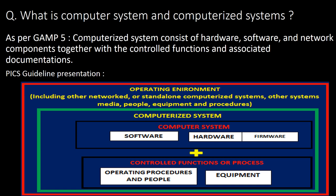Another basic and frequently asked question is: what is a computer system and a computerized system? As per GAMP-5, a computerized system consists of hardware, software, and network components together with the control functions and associated documentation. As per the PICS guideline, a computer system is formed with software, hardware, and firmware, whereas when it includes control functions or processes like operating procedures and people along with equipment, it forms a computerized system.